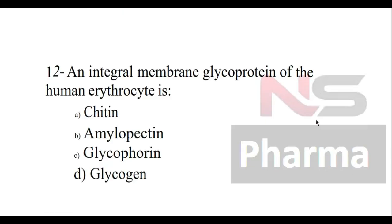Question number twelve: An integral membrane glycoprotein of the human erythrocyte is — Option A: Chitin, Option B: Amylopectin, Option C: Glycophorin, Option D: Glycogen.